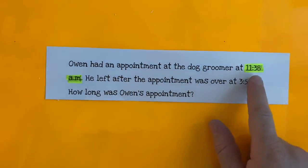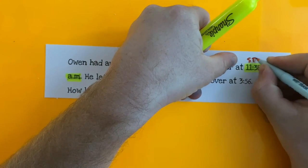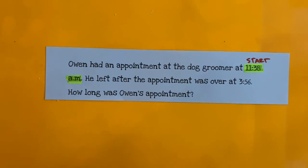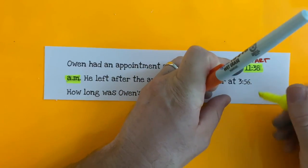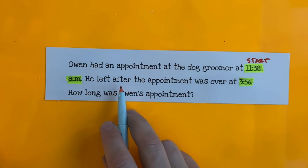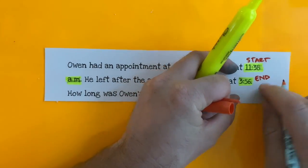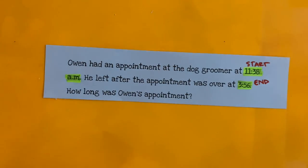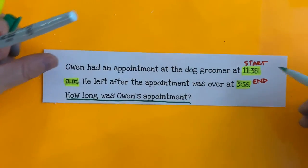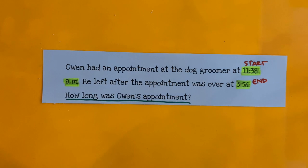Since his appointment began at 11:38, that tells us that this is our start time. He left after the appointment was over at 3:56, so since this is after the appointment, this will be our end time. How long was Owen's appointment? That's the question we're being asked to answer. Now, if we have our start time and our end time, we are looking for the elapsed time.